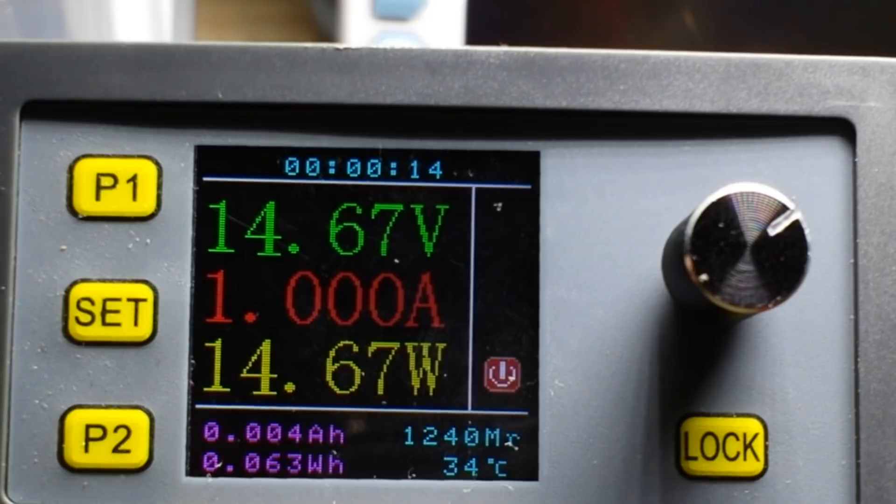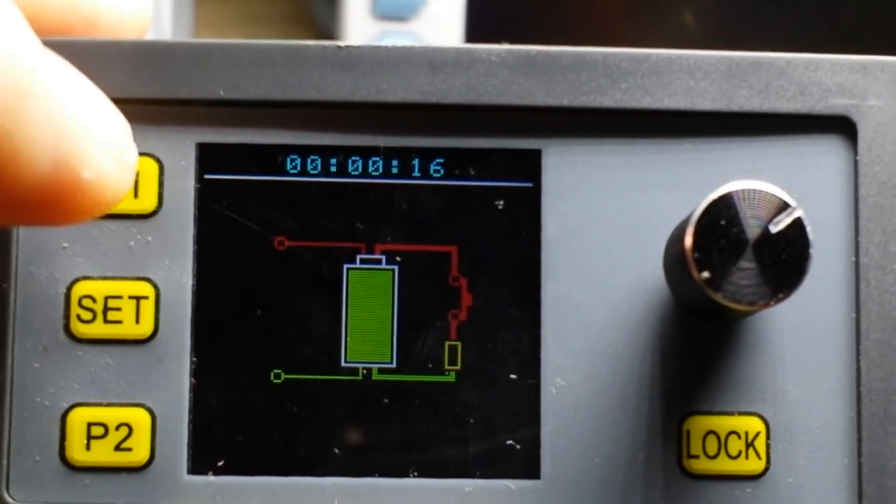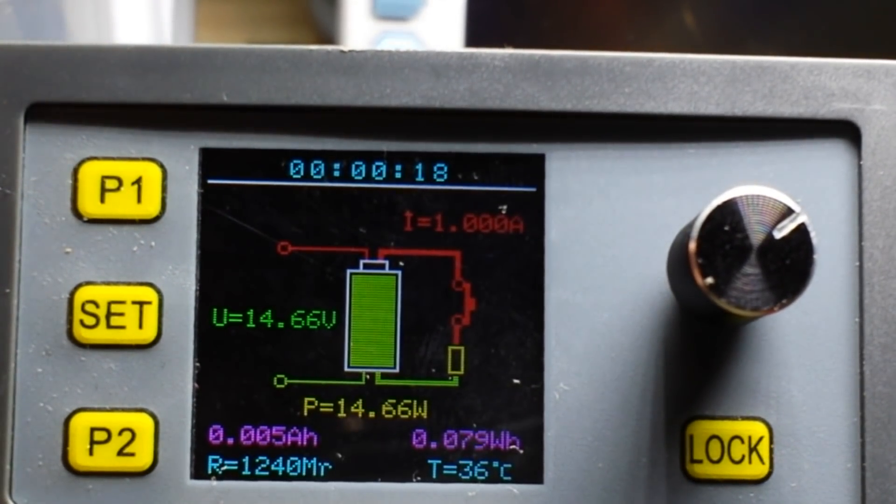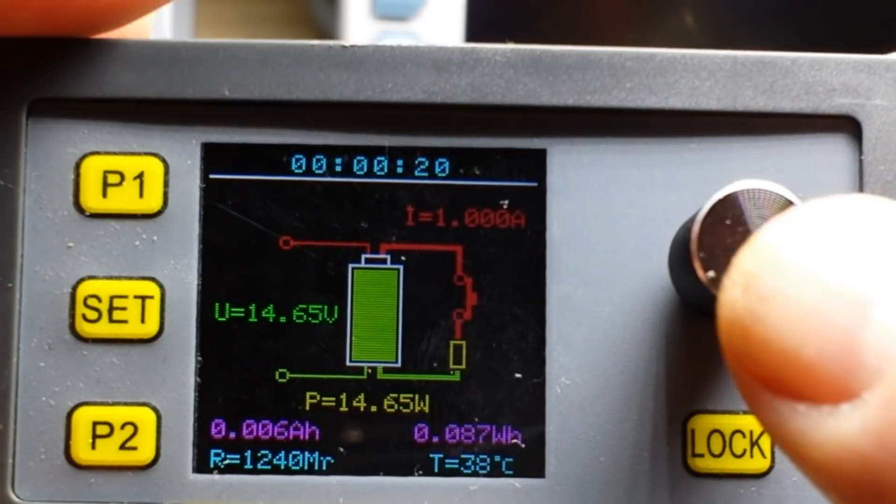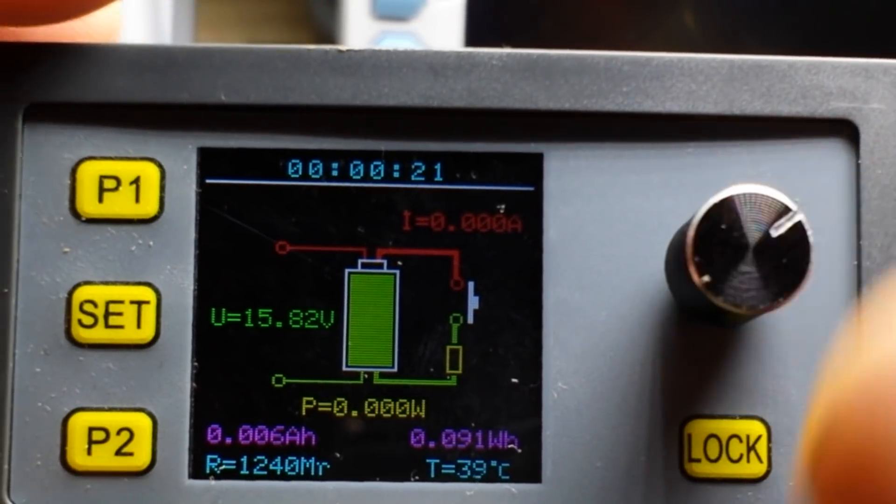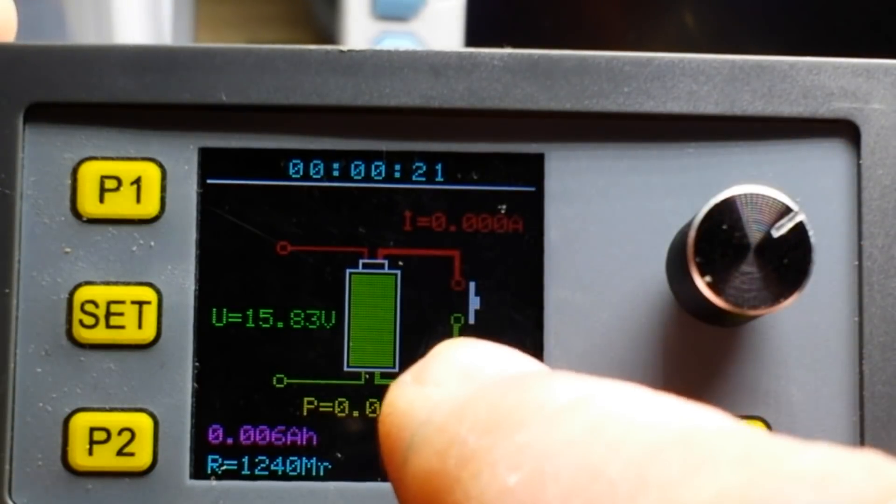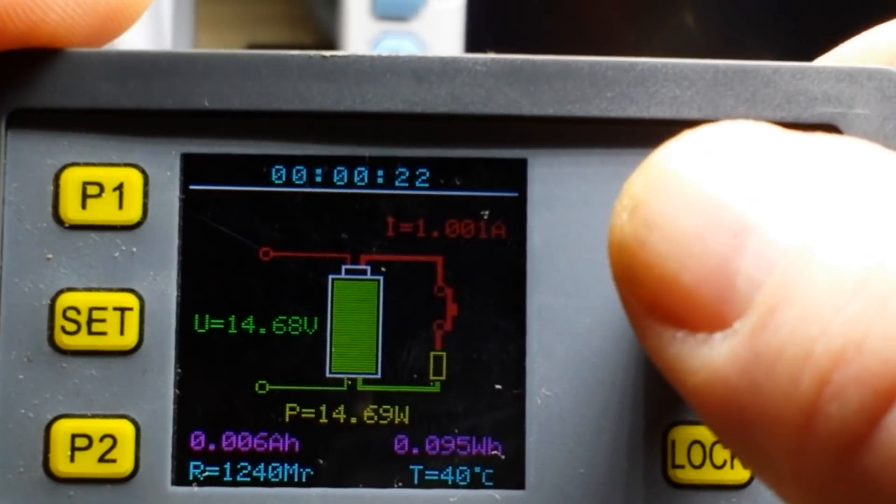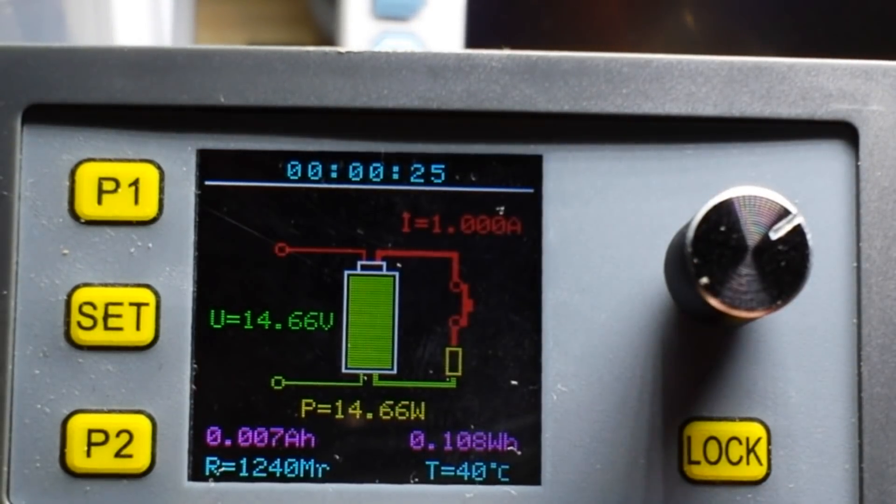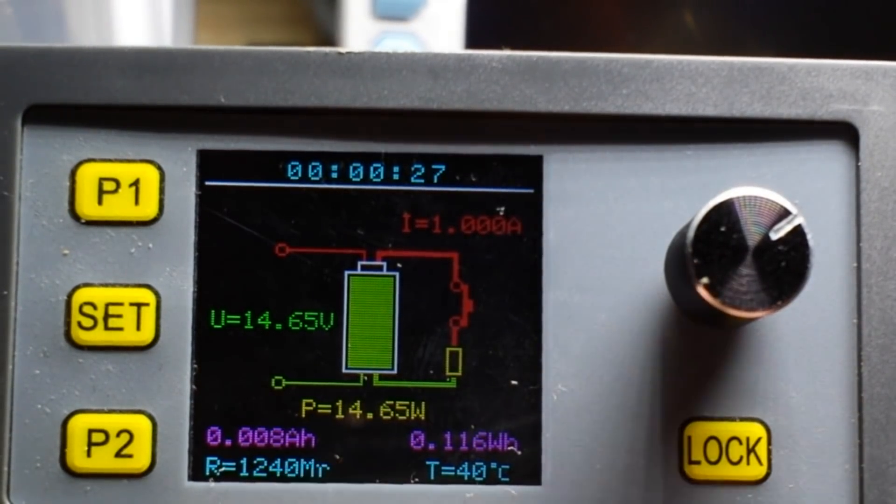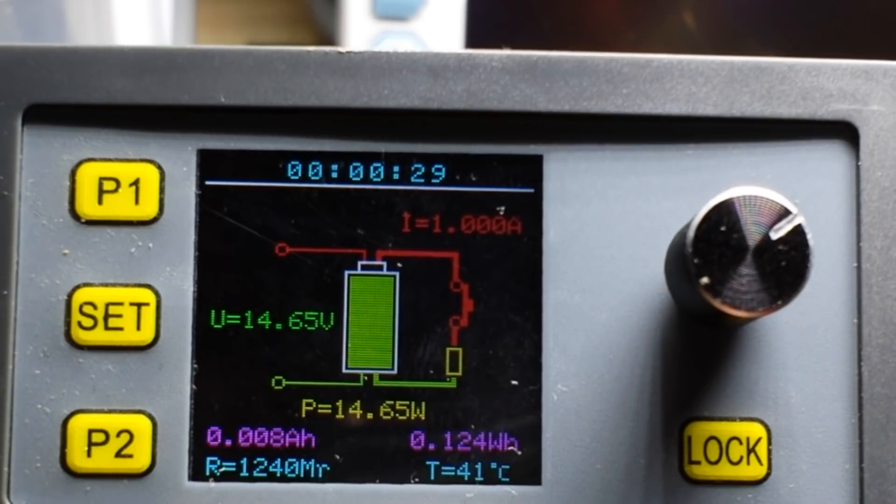So now it's putting the load on the battery. Let's see what happens if we go back to page one. It's working, so it shows the switch is open. Okay, switch is closed. There we go, we got one amp, 14 volts, 14.65 watts. There's our temperature and it's even telling us the internal resistance of the battery.